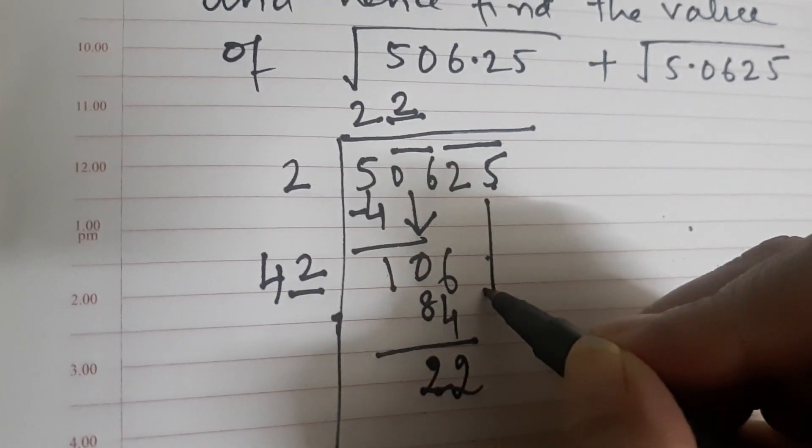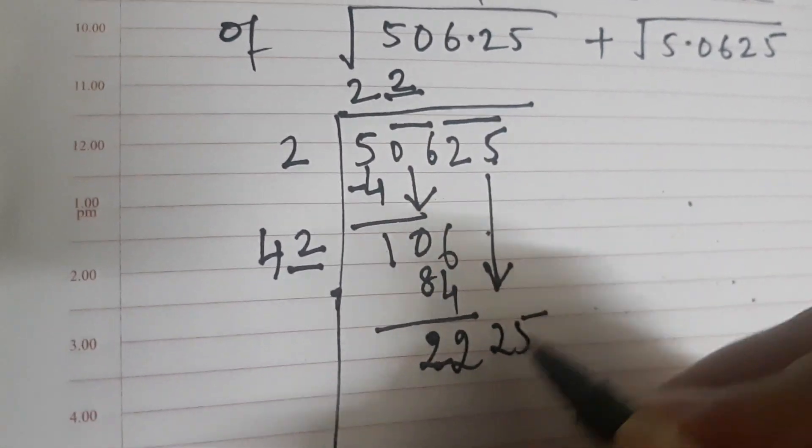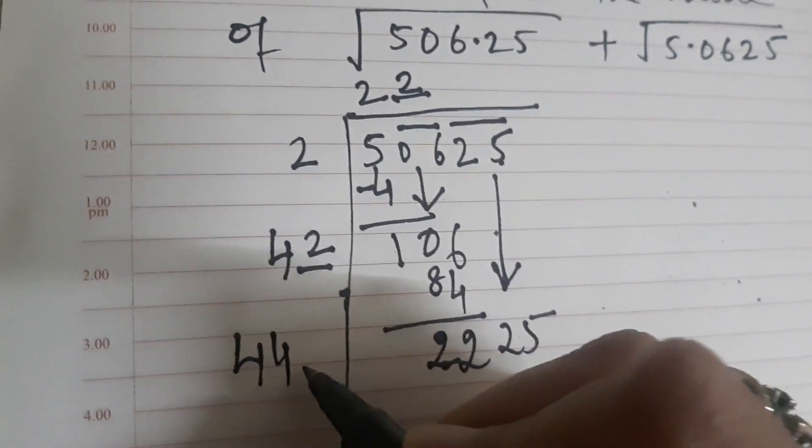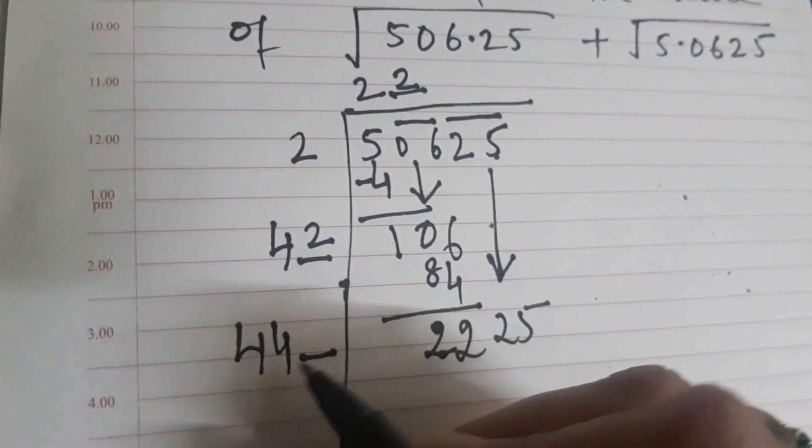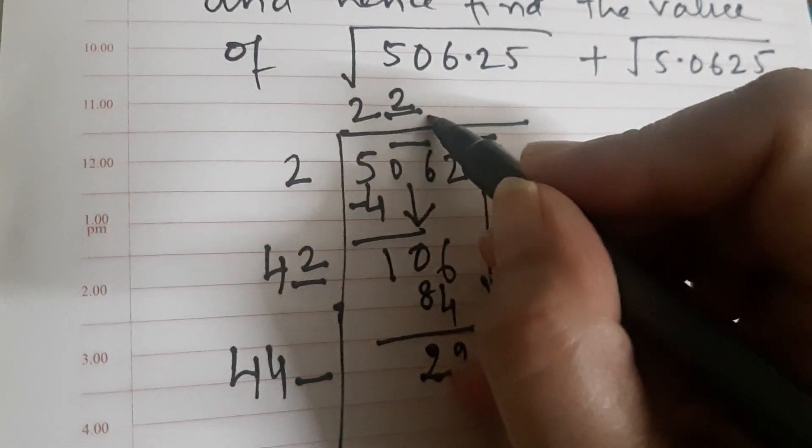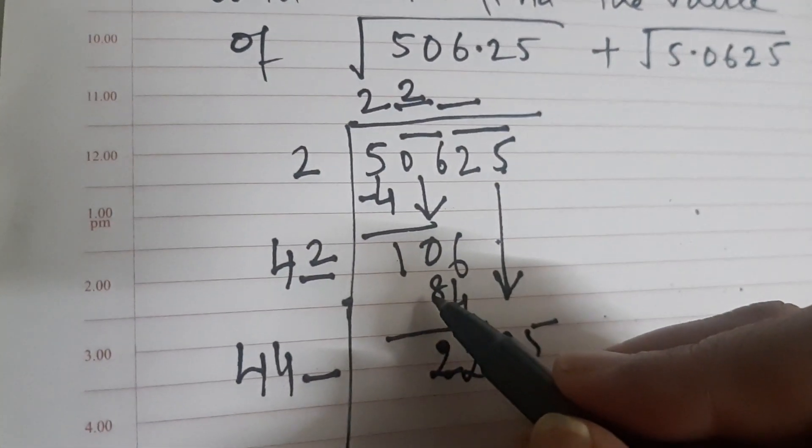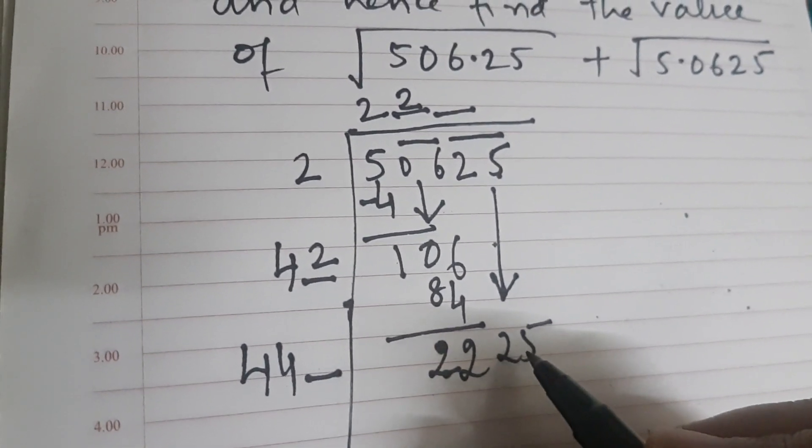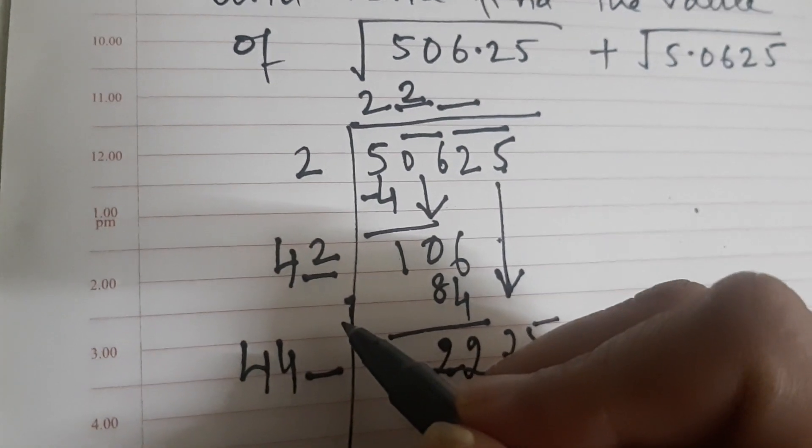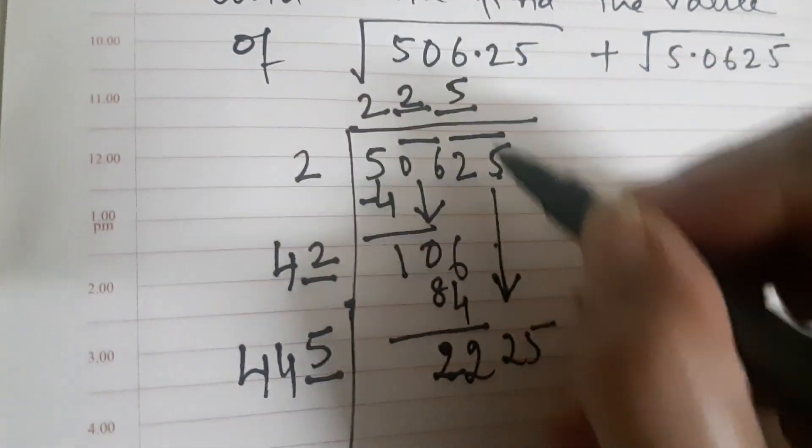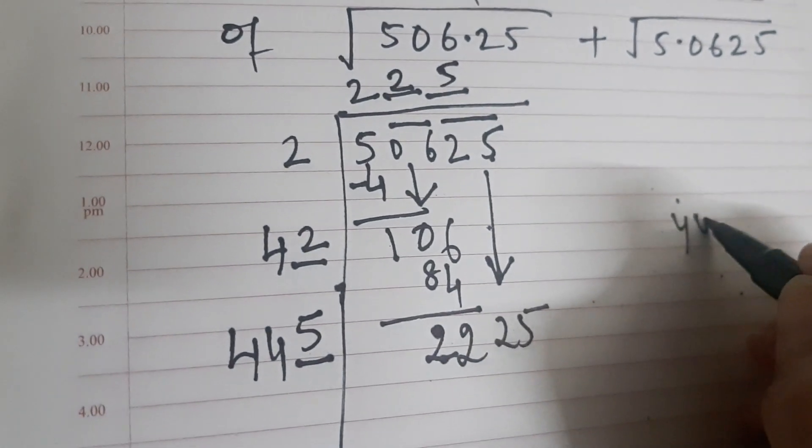So 6 minus 4 is 2, and here it is also 2. Take out the next period which is 25, and 42 plus 2 gives me 44. Now look for another digit which I have to place after 44, which will be multiplied by the same digit to give me a number less than or equal to this.